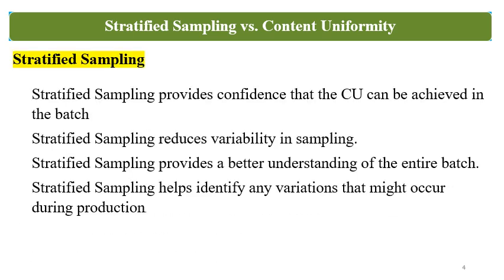Stratified Sampling's advantages include providing confidence that Content Uniformity or Uniformity of Dosage Units can be achieved in the batch. Once you get results confirming to the predetermined specifications for Stratified Sampling, you will have confidence that Content Uniformity testing will pass for this batch. Stratified Sampling reduces the variability in sampling and provides a better understanding of the entire batch, helping to identify any variations that might occur during production.